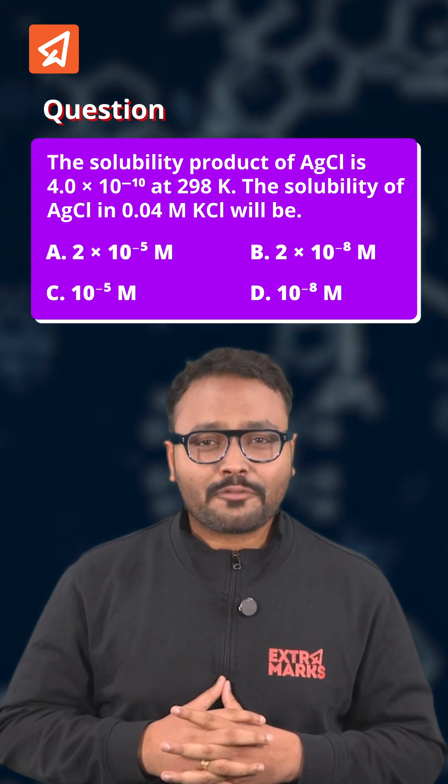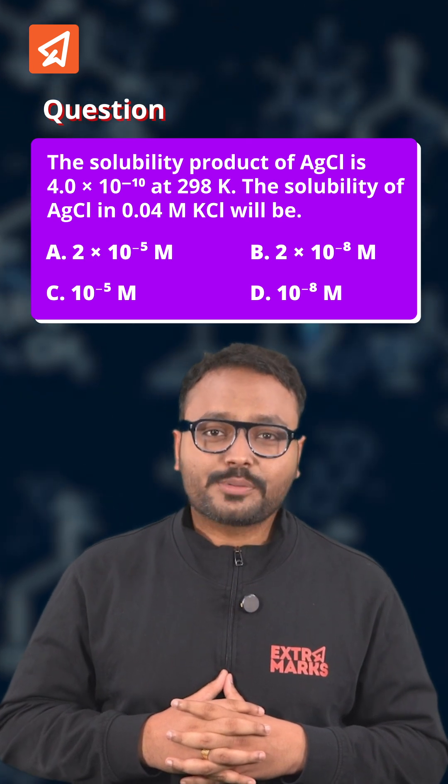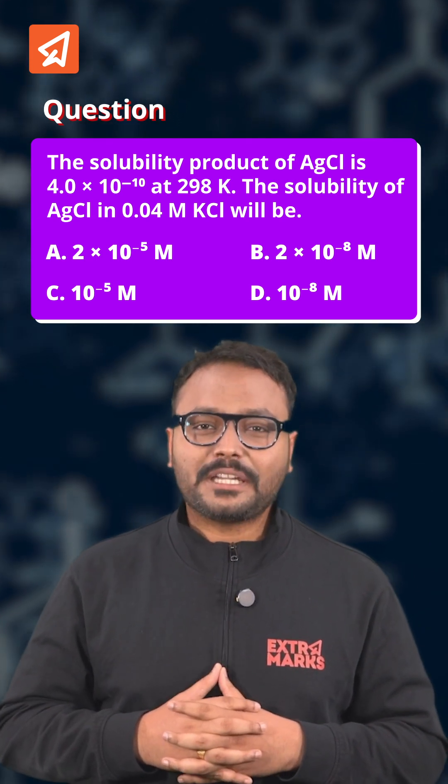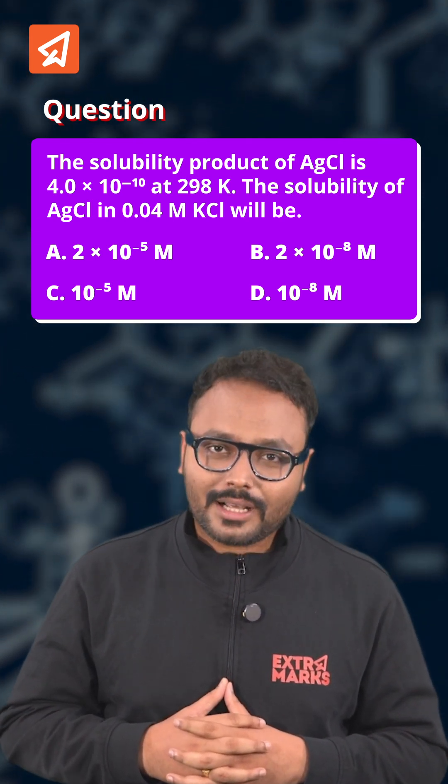As expected, most of you might have chosen option A, that is 2 × 10⁻⁵ molar. Here is the common mistake you have committed — you have not considered the common ion effect.